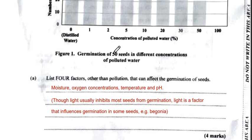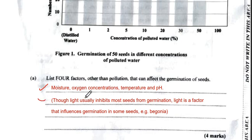The question asks us to list four factors, other than pollution, that can affect the germination of a seed. First, you have moisture, then oxygen concentration, temperature, and pH level. We can also mention light — light usually inhibits most seeds from germination. So not having enough light can inhibit the germination of most seeds.